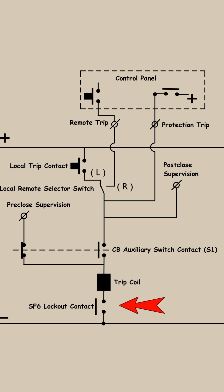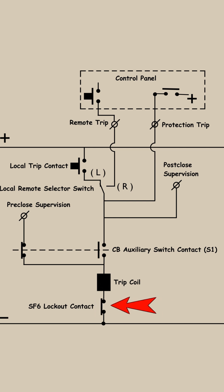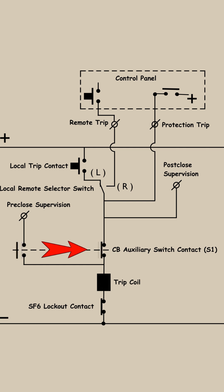This is the SF6 lockout contact. When the SF6 gas pressure is normal or above the trip limit, this contact will remain in the closed position. And when the circuit breaker is in the closed condition, that NO switch will be closed and the NC contact will be open.